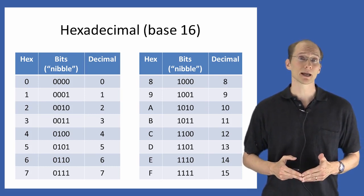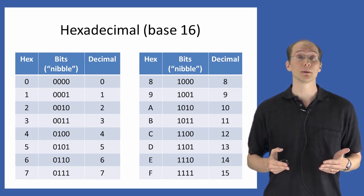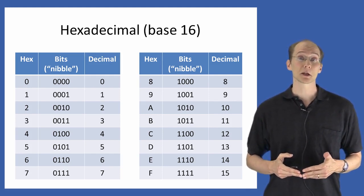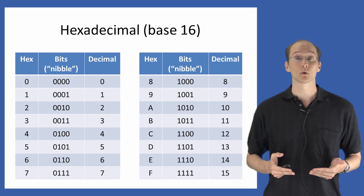As you see here, the hex digit 0 corresponds to the nibble 0000, and so on up through the hex digit F, which corresponds to the nibble 1111.